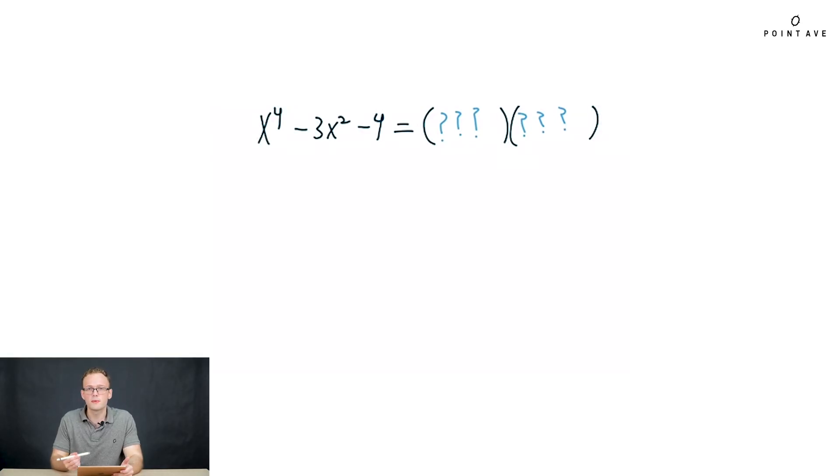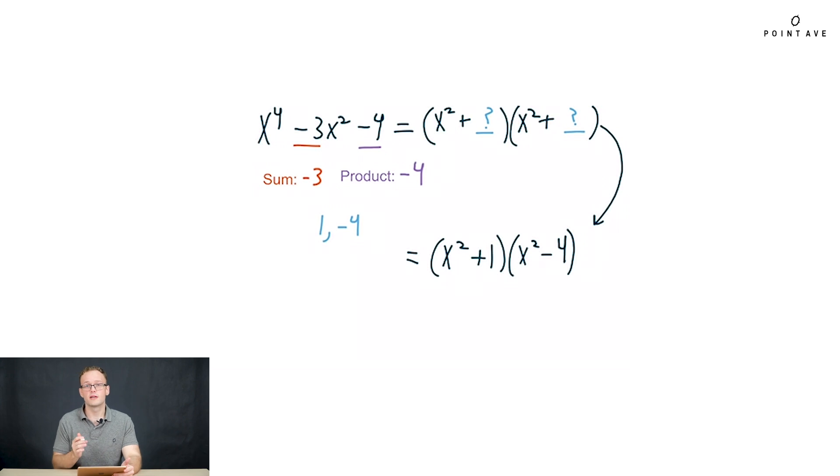How do we apply quadratic factoring when we don't actually have a quadratic? On the left hand side we have x to the fourth, so to get that from the right hand side we're going to have to multiply two x squareds. On the right hand side we're going to have x squared plus something and x squared plus something. Now we can just carry on product sum like we did before. Our product has to be negative four and our sum has to be negative three. We can guess and check and reach that our numbers are one and negative four. Our factored form is x squared plus one times x squared minus four.